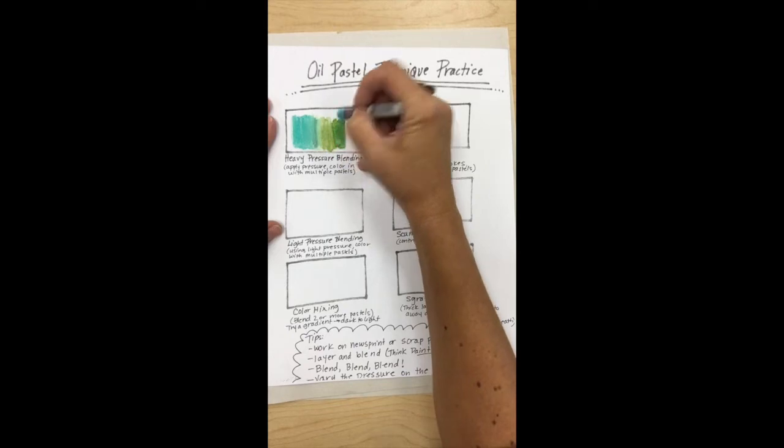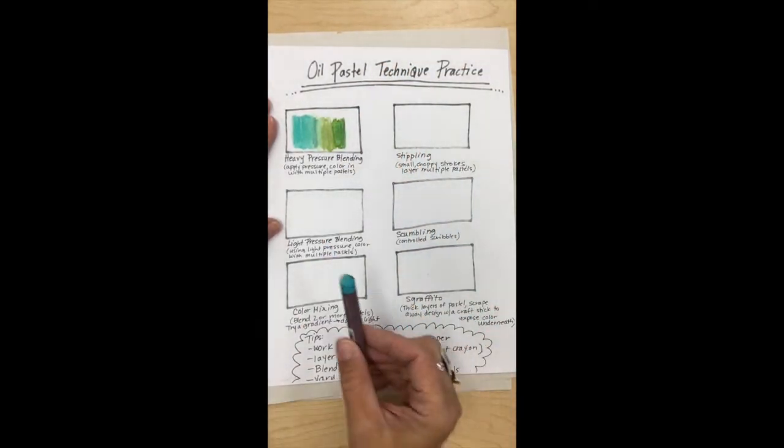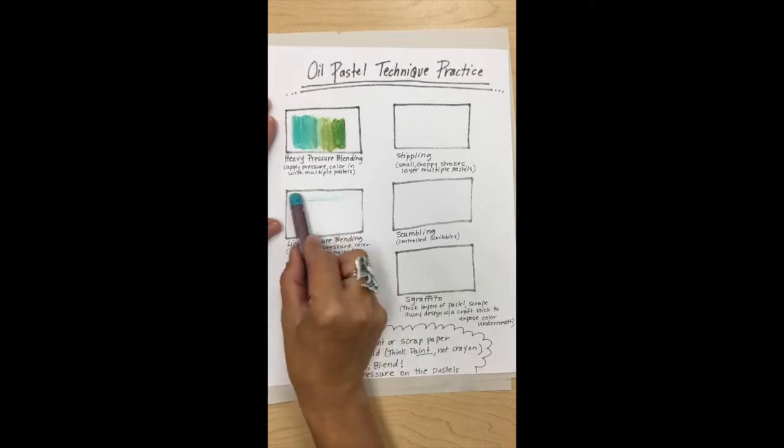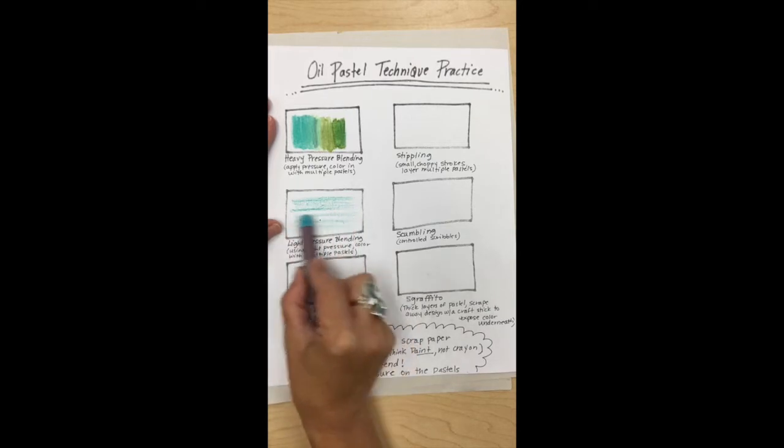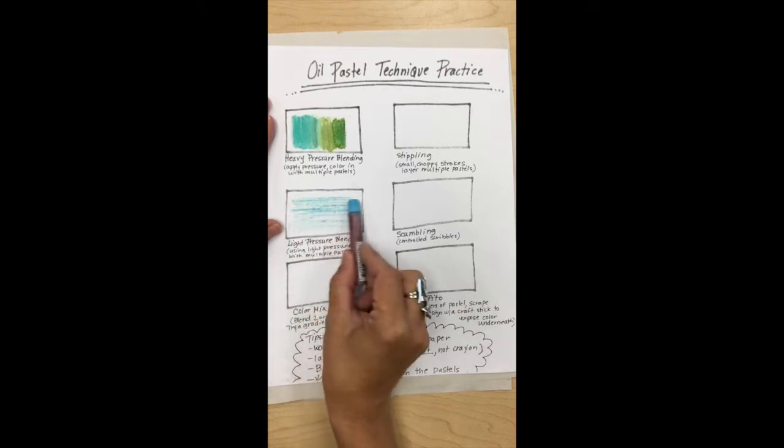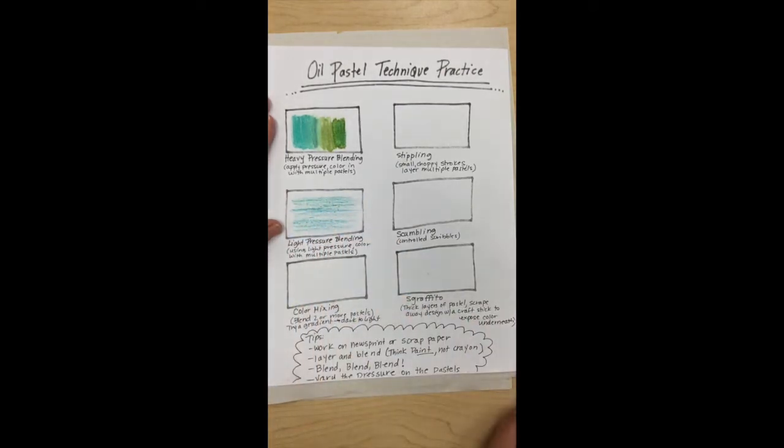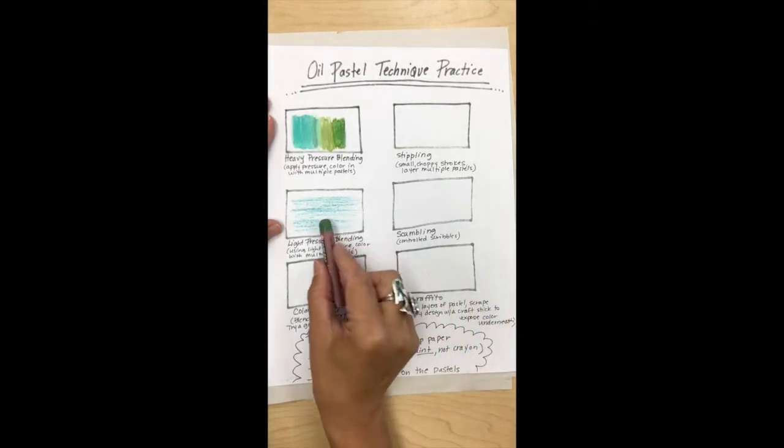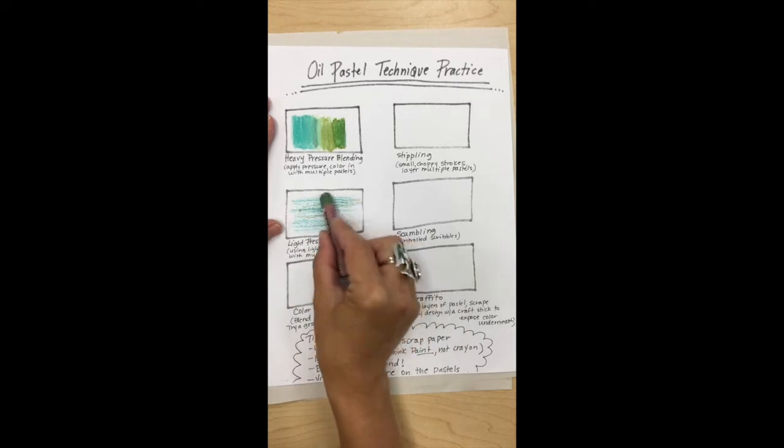All right, light pressure blending, kind of self explanatory, but you're gonna go with a really light pressure on the pastel. You're gonna get a little bit more texture and you're not just gonna use one color, you're gonna use a few colors. So for each one of these techniques you'll notice that I choose more than one color and I'm gonna blend them together. It doesn't have to be drastic, I don't have to pick a red in here or anything like that, but I am blending and mixing. So it's light pressure blending.